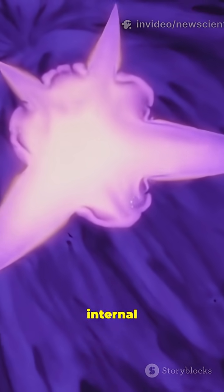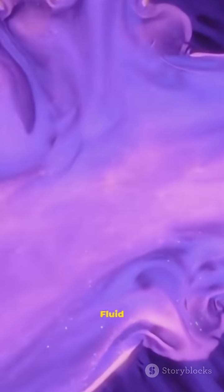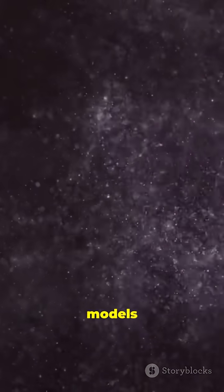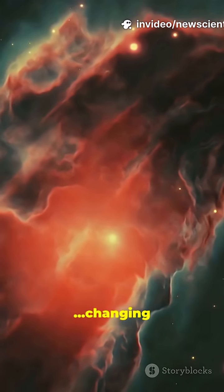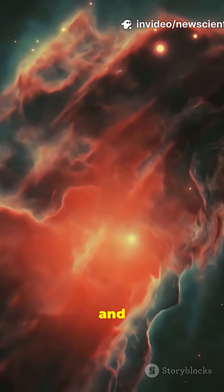Myth: A supernova is a simple outward shock. Reality: Messy internal engines are steering the blast. Fluid instabilities are wilder than models predicted. Shock waves travel differently through the star, changing how inner layers mix and get hurled out.